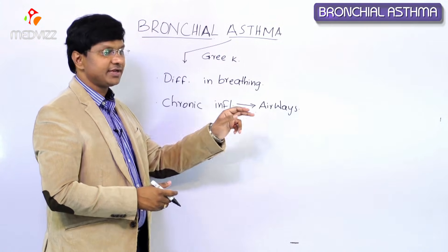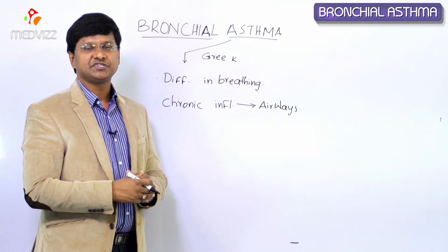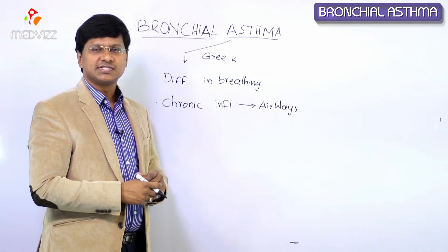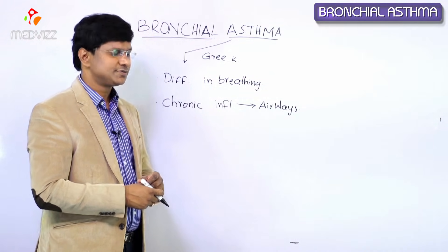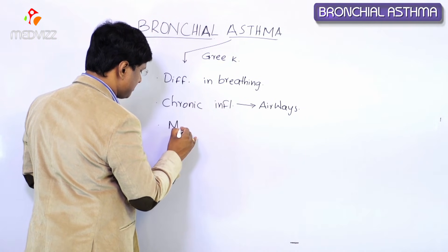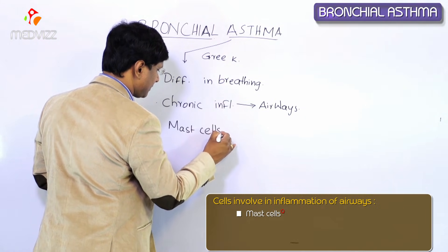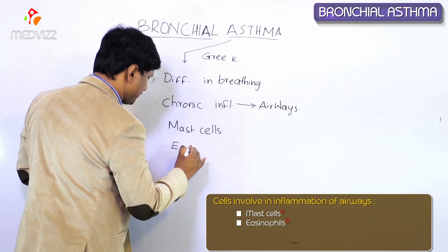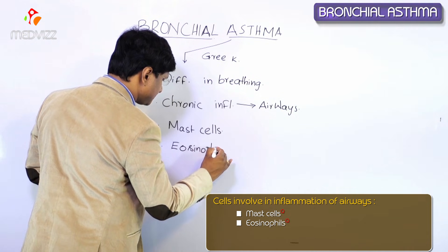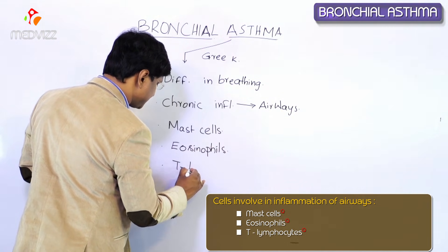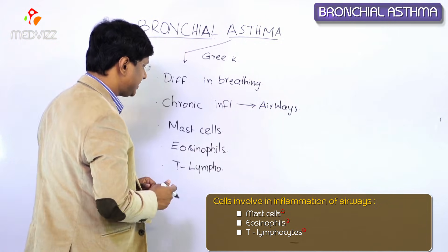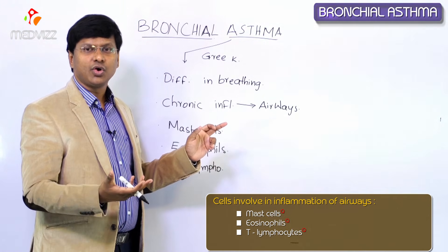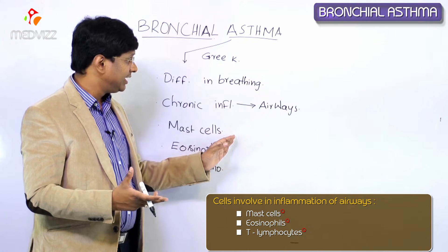For the inflammation of these airways, there are certain cells which play an important role. The cells involved in the inflammation of the airways include mast cells, eosinophils, and T lymphocytes. These are the cells which play the role of inflammation in bronchial asthma.